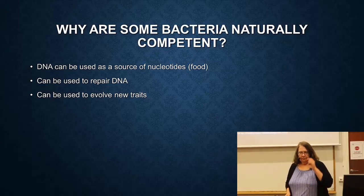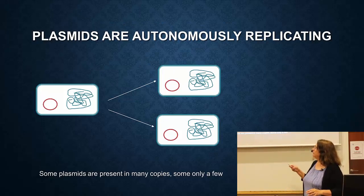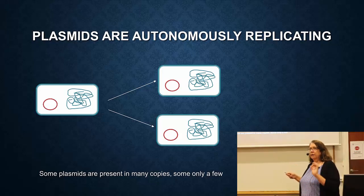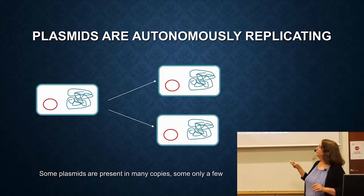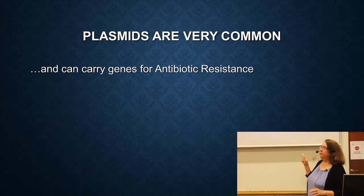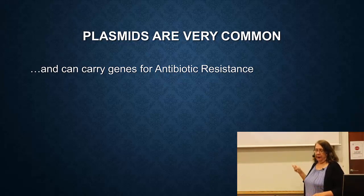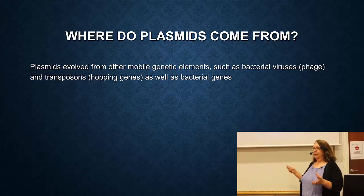That's the first way - transformation. Now, plasmids are small circular DNA molecules. We call them autonomously replicating, meaning they don't have to go into the chromosome. Every time the cell divides, it gets plasmids and copies the plasmid also. Some plasmids are in many copies, some in only one. Plasmids are incredibly common - most natural strains of bacteria have plasmids - and they can carry the genes for antibiotic resistance.